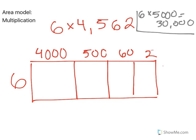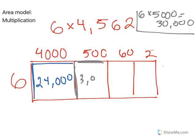Now I'm going to find the area of each of the pieces of my rectangle. The first piece has a width of 6 and a length of 4,000. 6 times 4,000 is 24,000. The next piece has a width of 6 and a length of 500. 6 times 500 is 3,000.